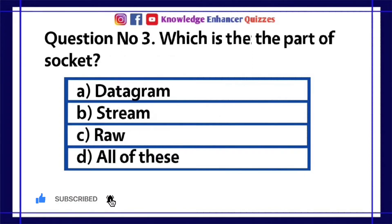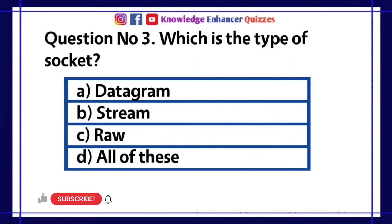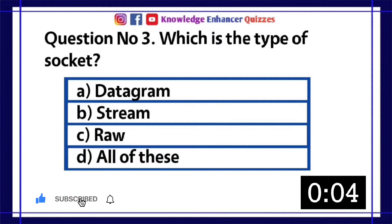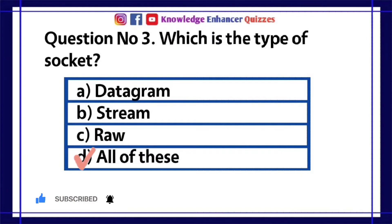Question number 3. Which is the type of socket? A. Datagram. B. Stream. C. Raw. D. All of these. Option D is the right answer.